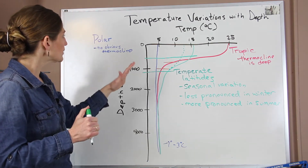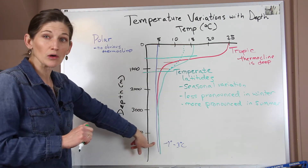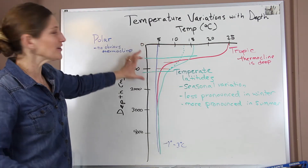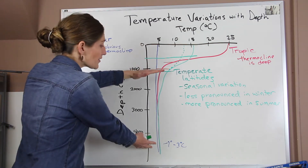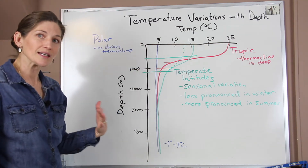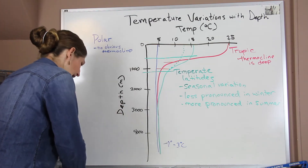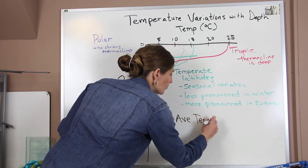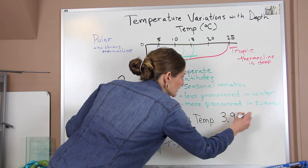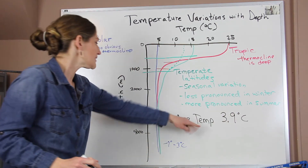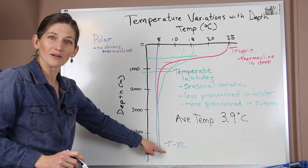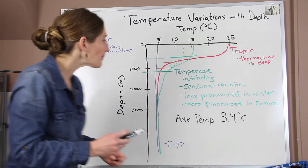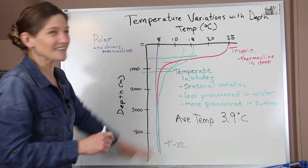Those are the three profiles. Overall, they all converge down to really cold, deep water. The warmest areas in our oceans aren't super deep, so most of our seawater is very, very cold. The average ocean temperature of all the water is 3.9 degrees Celsius, which is cold. This deep cold water is bringing down the average temperature — it takes away the effect of that really warm surface tropical water, because there's not as much of it as there is in our deeper ocean.